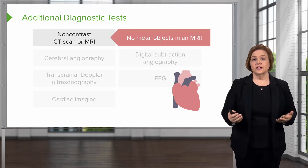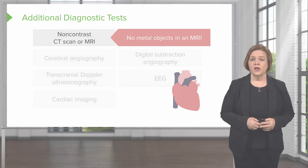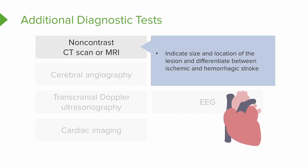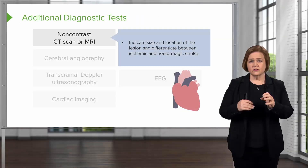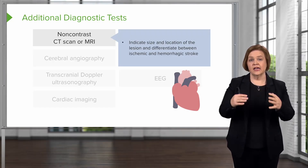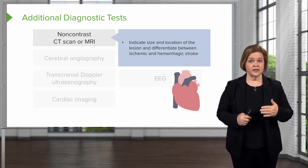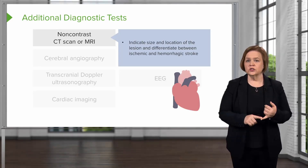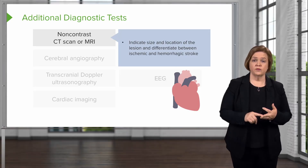Why would we do a non-contrast CAT scan or MRI for a neuro patient? These can tell us the size and location of a lesion, and they can help us differentiate between an ischemic stroke and a hemorrhagic stroke. An ischemic stroke is where oxygenated blood supply has been cut off to the brain. A hemorrhagic stroke is caused by excessive bleeding. So ischemic is a blocked blood supply; hemorrhagic is bleeding in the head.